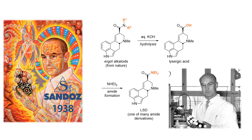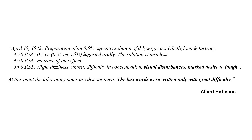For a long time, semi-synthesis was the only way to access complex natural products and it remains a highly useful tool for drug discovery and development. Bromocryptine, the Parkinson's drug we talked about in the beginning, is made semi-synthetically on a large scale nowadays. It was only five years later in 1943 that, after some accidental and intentional self-experiments, Hoffmann discovered the psychoactive properties of this lysergic acid derivative.